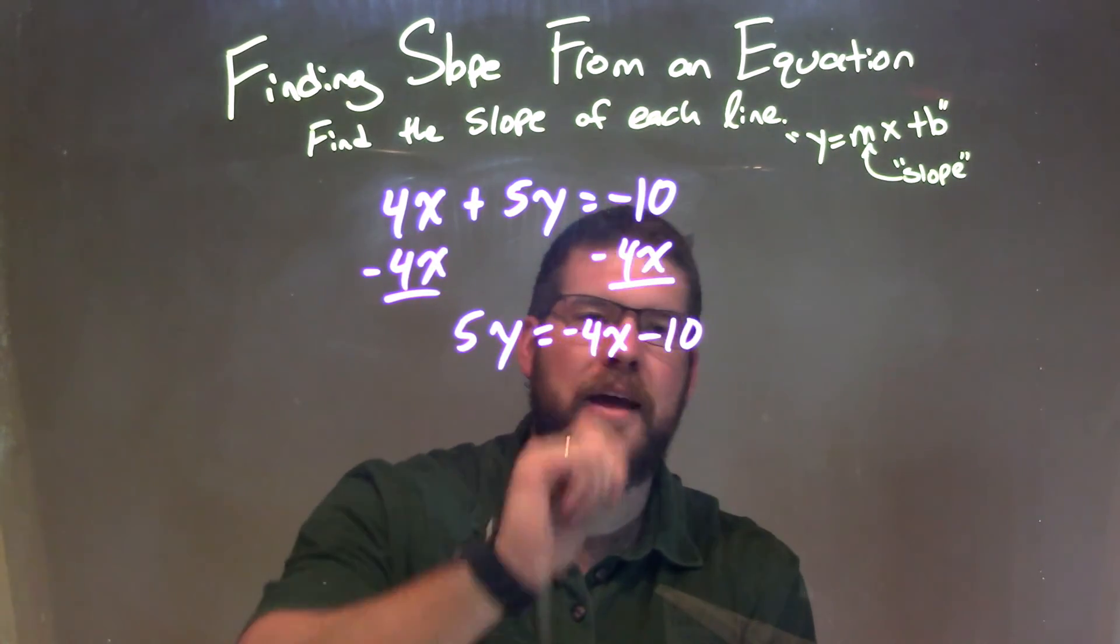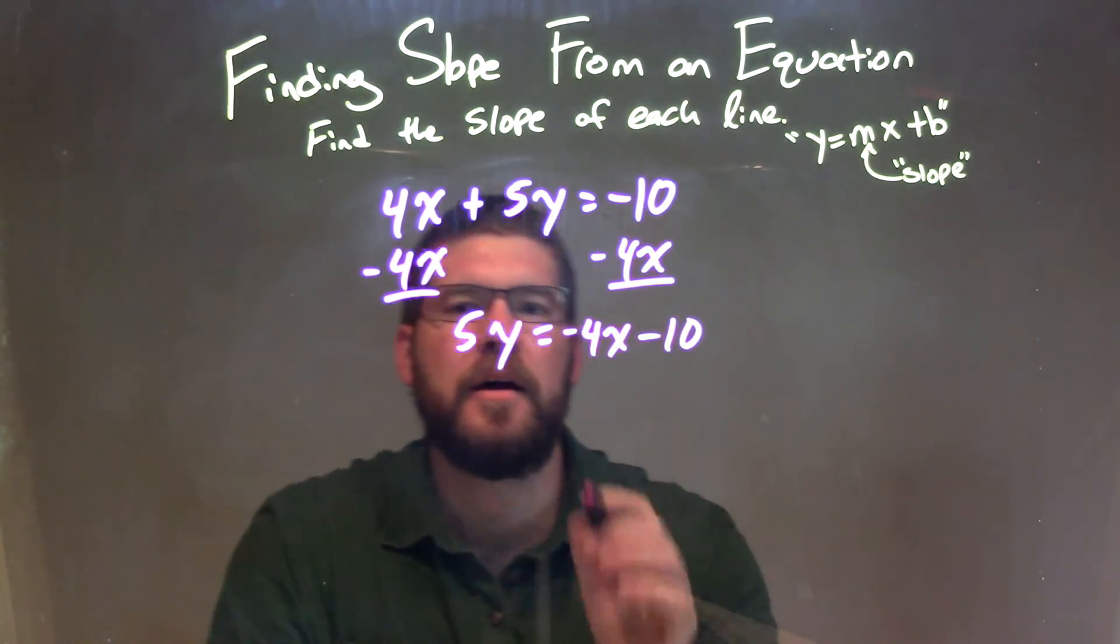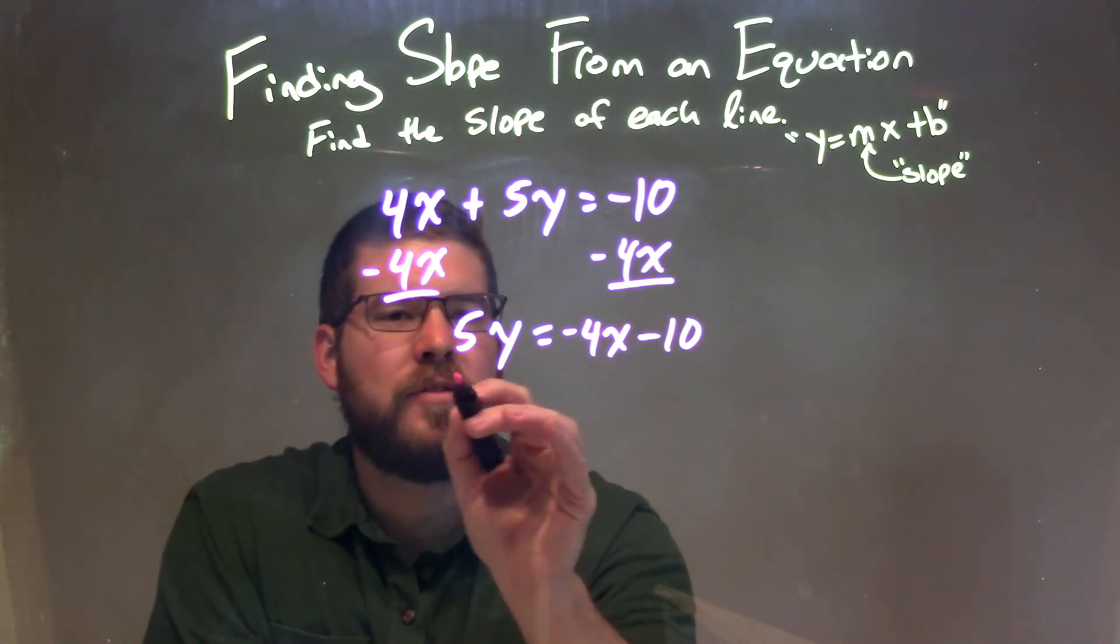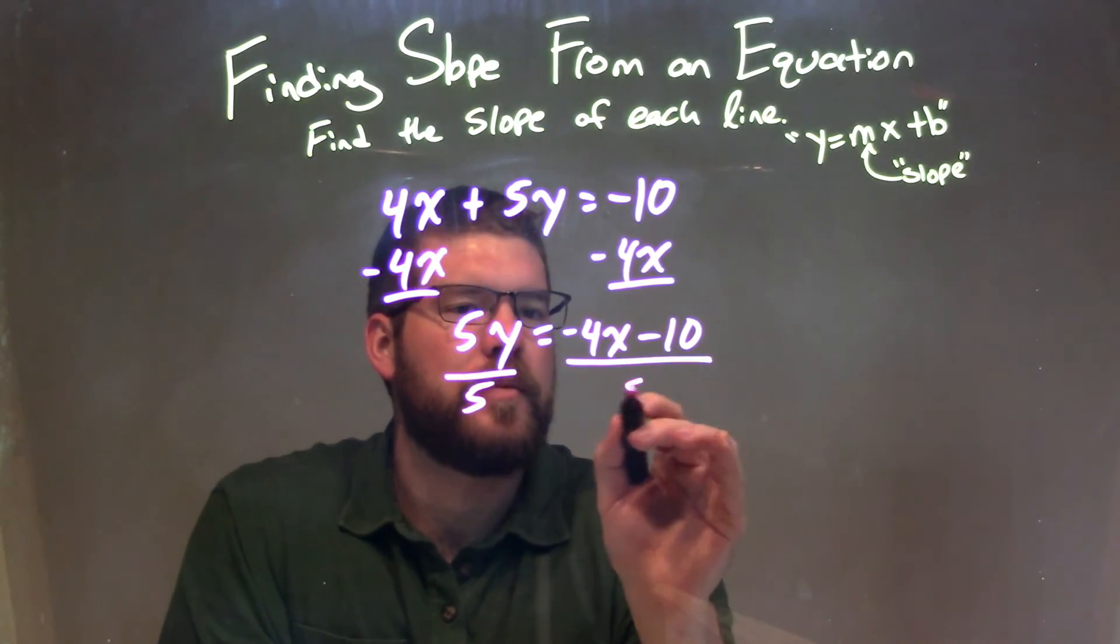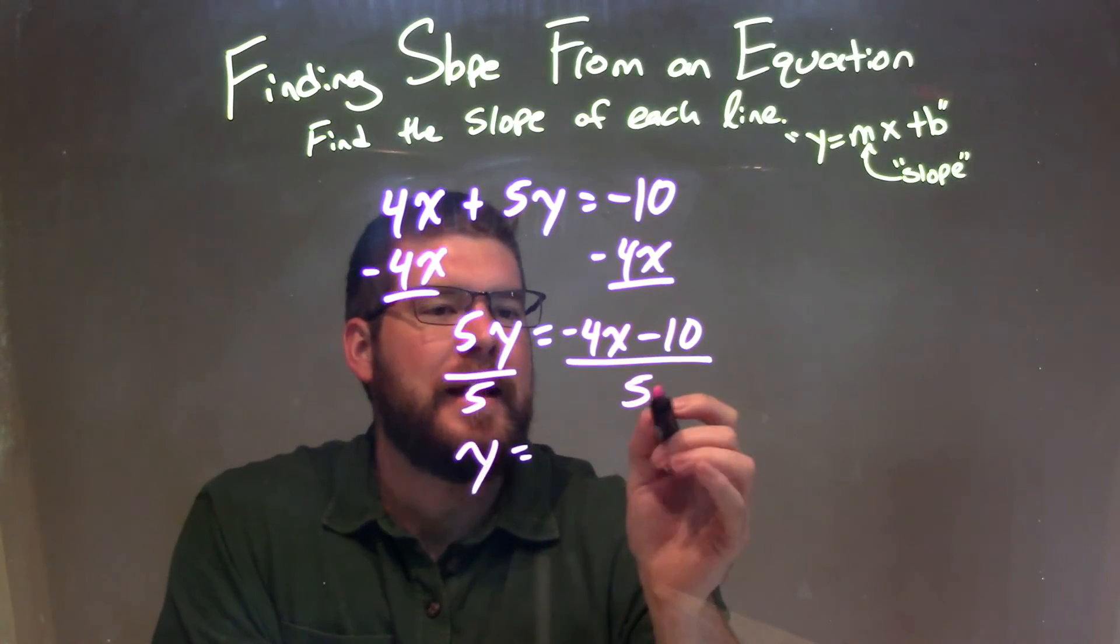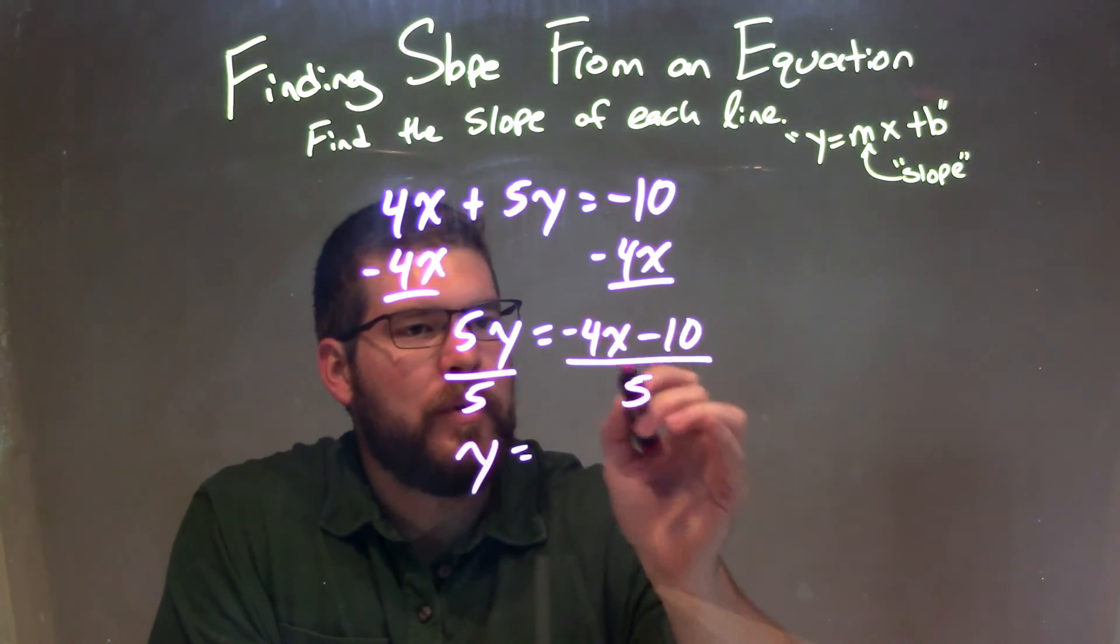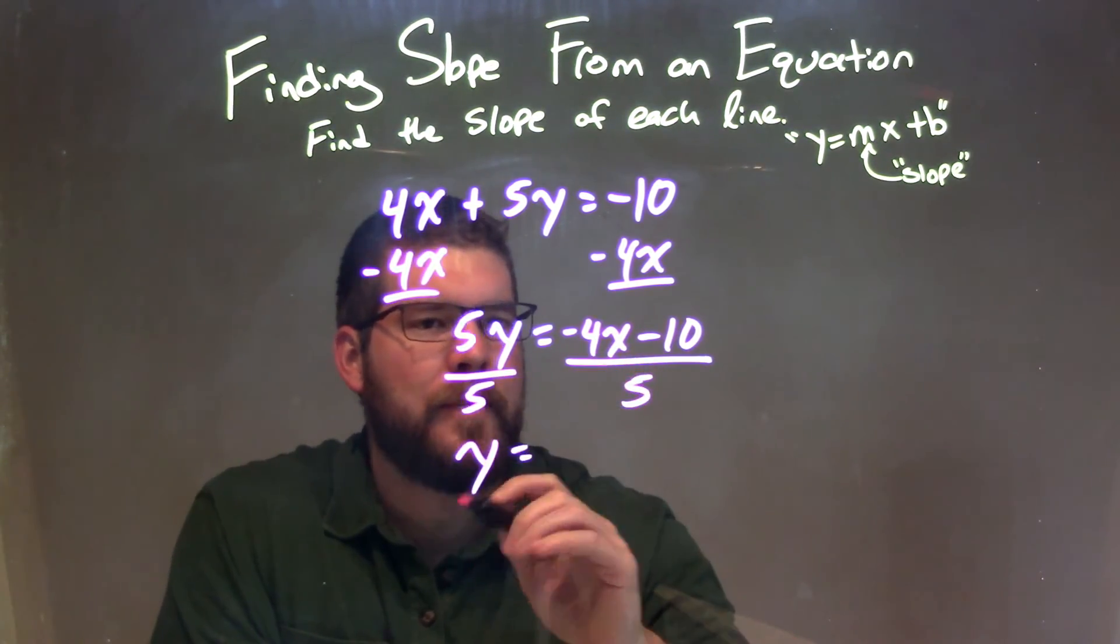So now we have 5y equals negative 4x minus 10. Well, y is still not isolated, so I need to divide by 5 on both sides. It gives me y by itself here, and now I need to distribute that 5 to both parts: negative 4x and negative 10.